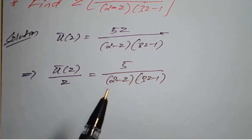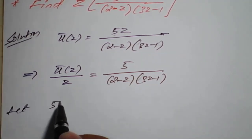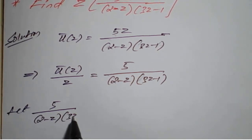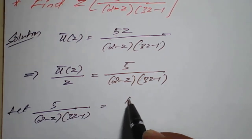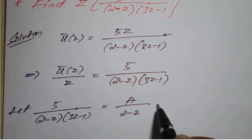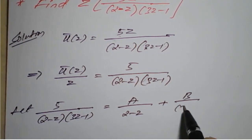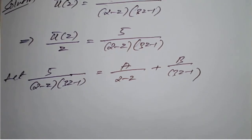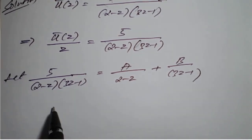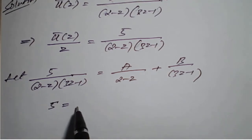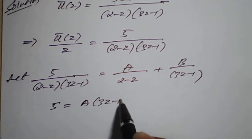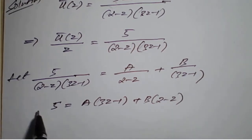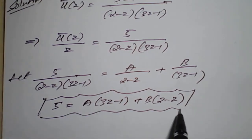Now we simplify the right-hand side using partial fractions. Let 5 divided by (2 minus z) into (3z minus 1) be written as A divided by (2 minus z) plus B divided by (3z minus 1). On taking LCM and simplification, it becomes: 5 = A(3z minus 1) plus B(2 minus z).